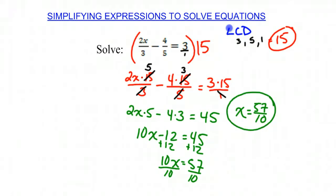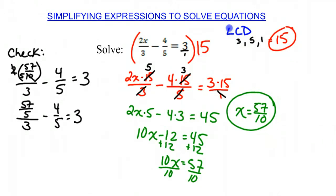Now, before we can say this is definitely our answer, we have to check that it is correct. So we're going to check by replacing x with 57 over 10. So we have 2 times 57 over 10 divided by 3 minus 4 over 5 equals 3. 57 over 10 times 2. 2 and the 10 cancel out, leaving a 5 there. So we have 57 divided by 5 over 3 minus 4 over 5 equals 3.